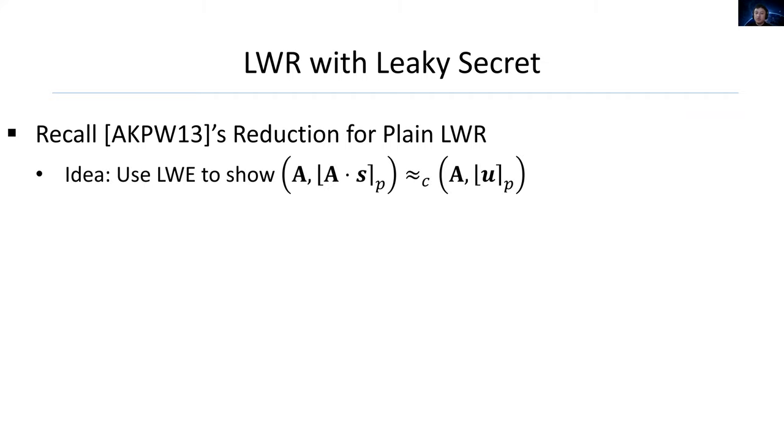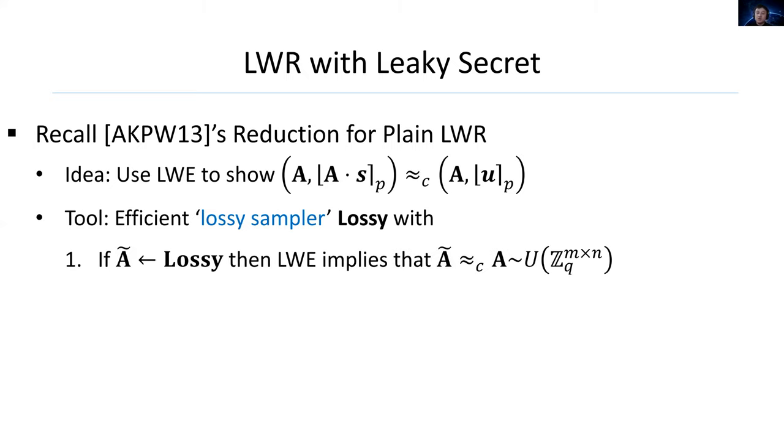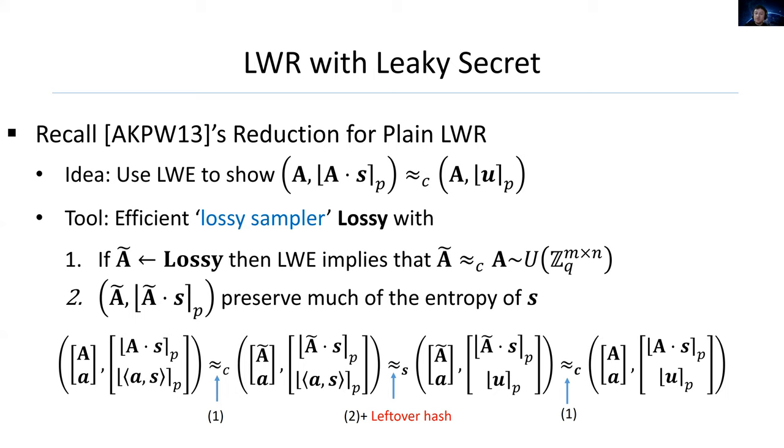This result also answers the other open question in prior works. Before presenting our contribution, I'd like to introduce an interesting reduction for plain LWR proposed by the work AKPW13 by Alwen, Krenn, Pietrzak, and Wichs in 2013. Their idea is using LWE to show the pair (A, rounding of A·S) is computationally indistinguishable from the pair (A, rounding of random elements). The key tool of their reduction is an efficient lossy sampler with the following two properties. The first one is that the matrix A^Δ output by the lossy sampler, then LWE implies that A^Δ is computationally indistinguishable from random matrix A. The second one is the pair (A^Δ, rounding of A^Δ·S) preserves much of the entropy of S.